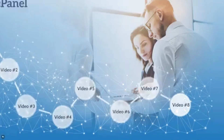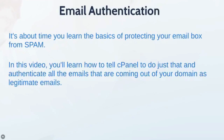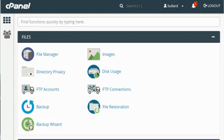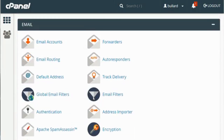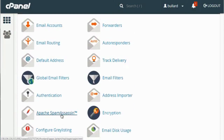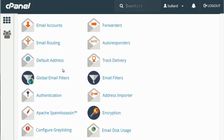Welcome back, this is video number eight. In this particular video we're going to talk about email authentication. It's about time you learned the basics of protecting your email box from spam. In this video you're going to learn how to use cPanel to authenticate all the emails coming out of your domain as legitimate emails. What this does is it protects you from other people abusing your email. There are two things you want to do: scroll down and find the Email section. The first thing is SpamAssassin, which will basically protect you from spam, and the second is what we call Email Authentication.